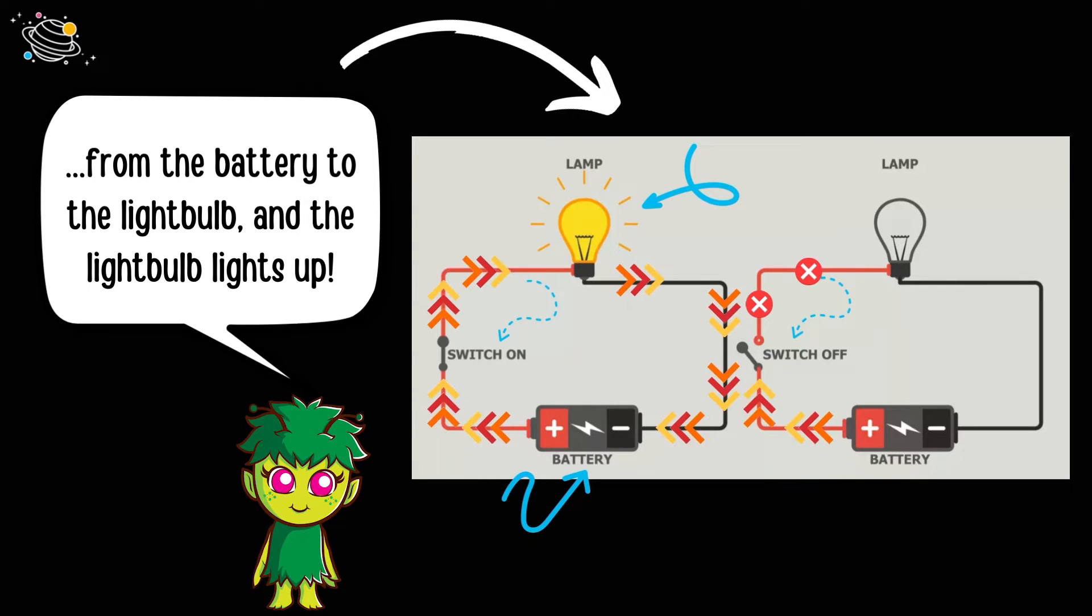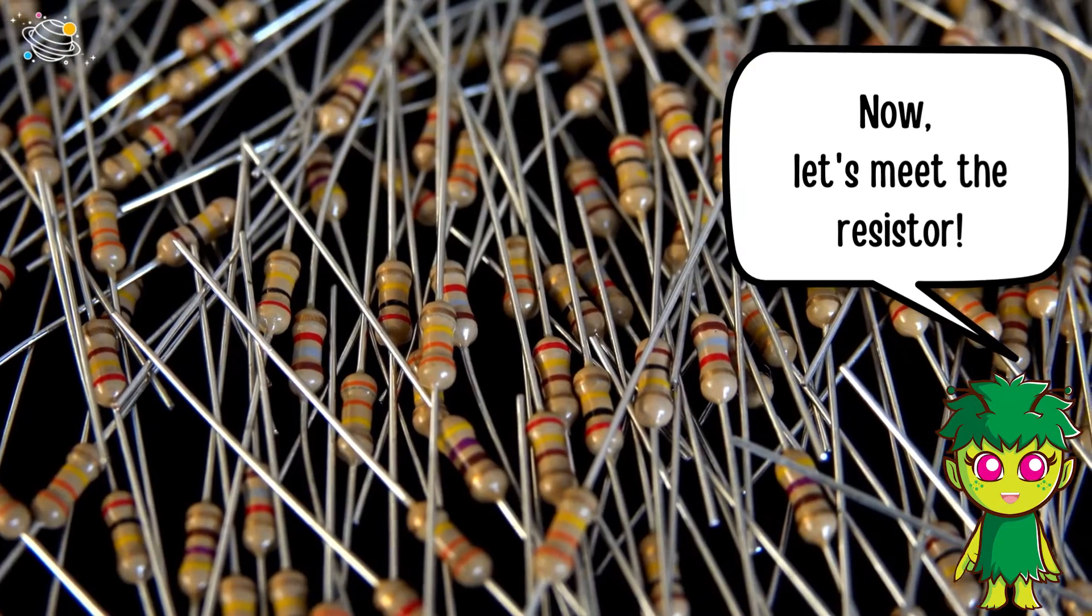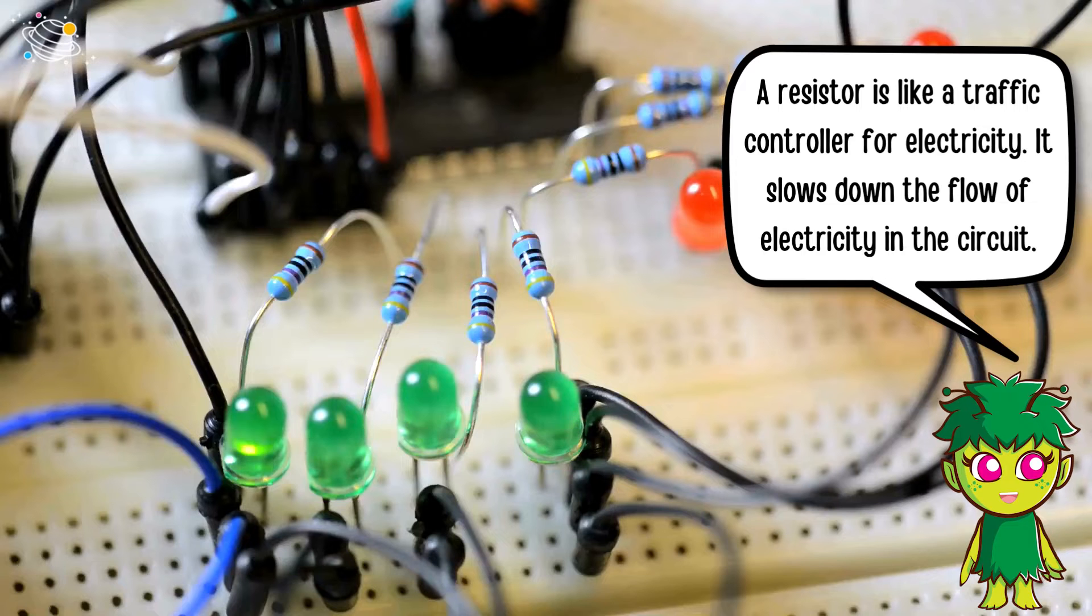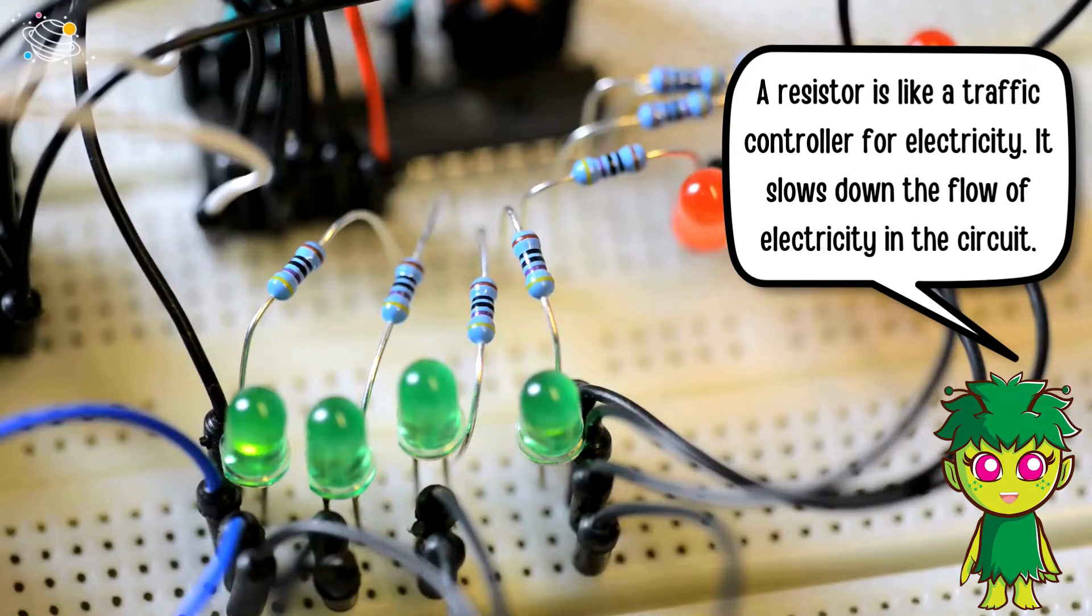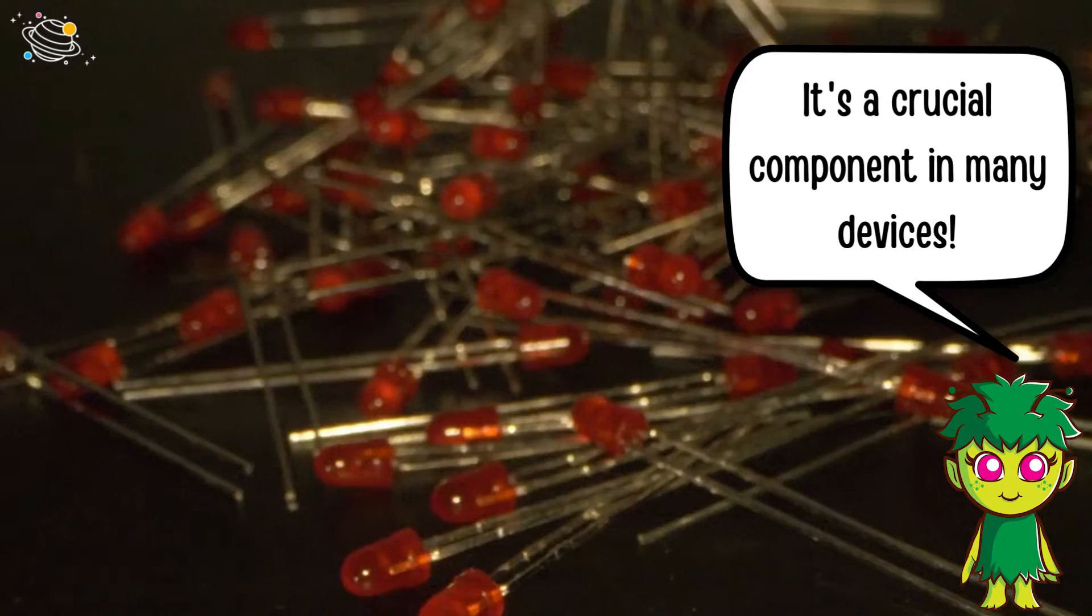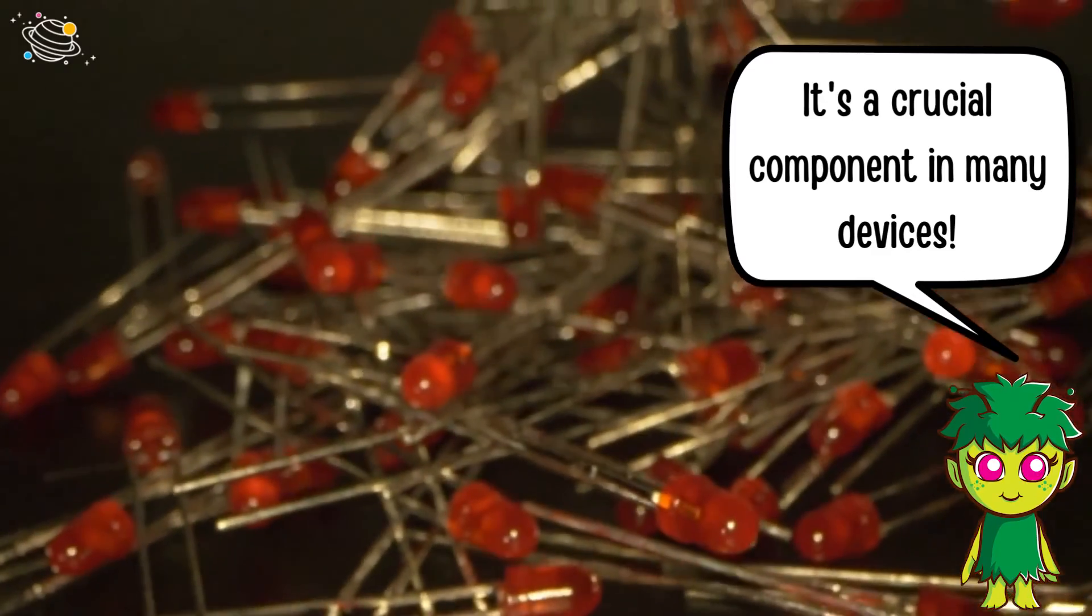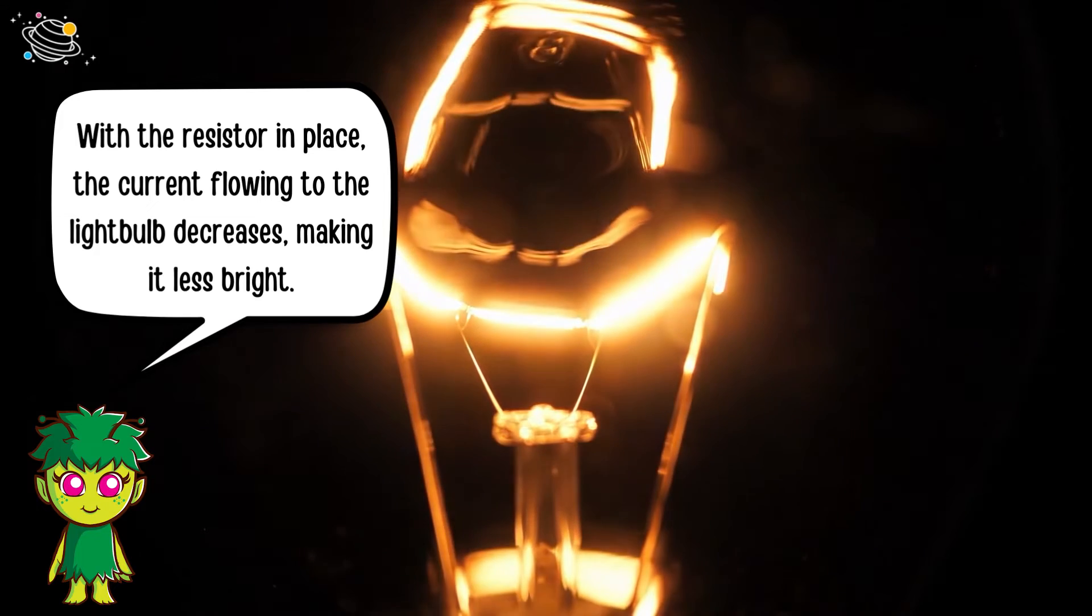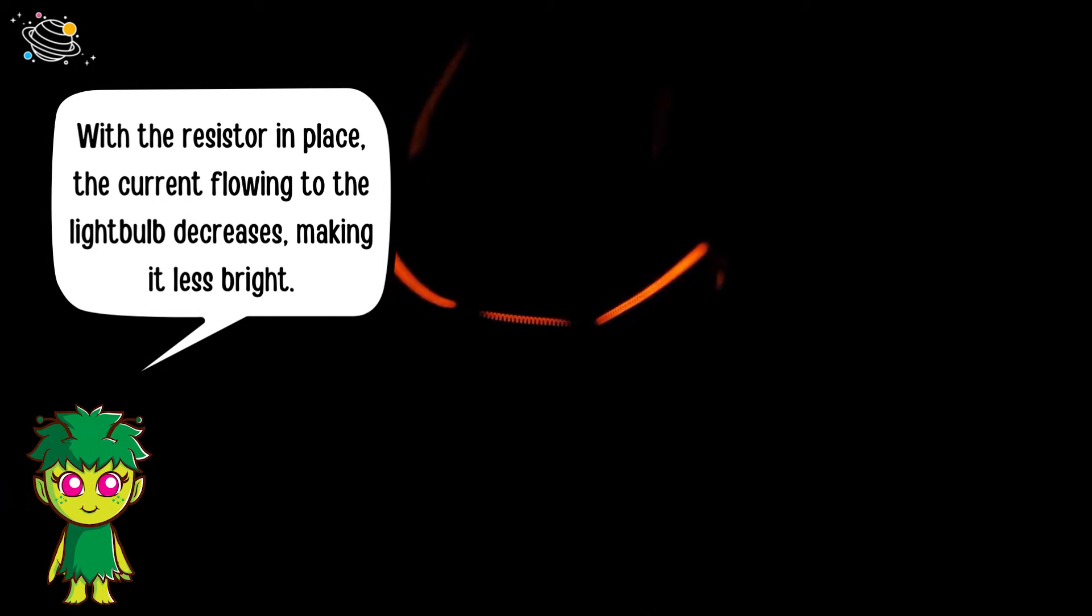Now let's meet the resistor. A resistor is like a traffic controller for electricity. It slows down the flow of electricity in the circuit. It's a crucial component in many devices. With the resistor in place, the current flowing to the light bulb decreases, making it less bright.